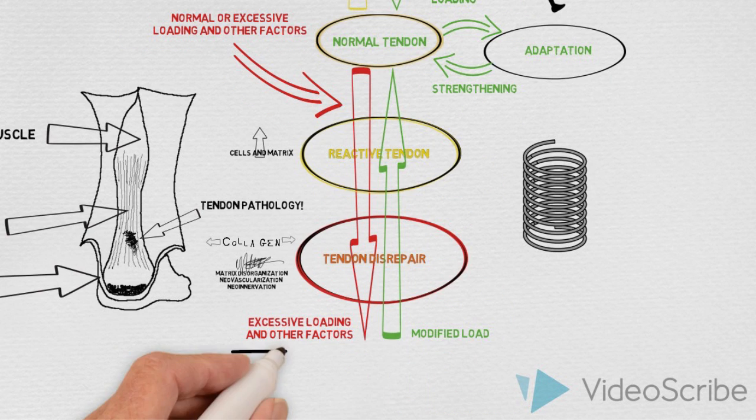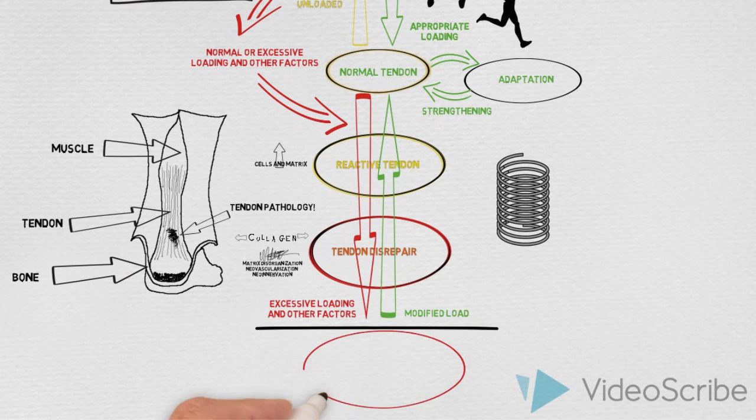However, if this does not occur, the tendon can become degenerative. Here we start to see cell death in the affected portion of the tendon. However, rehab can still target the unaffected portion of the tendon, so all is not lost.